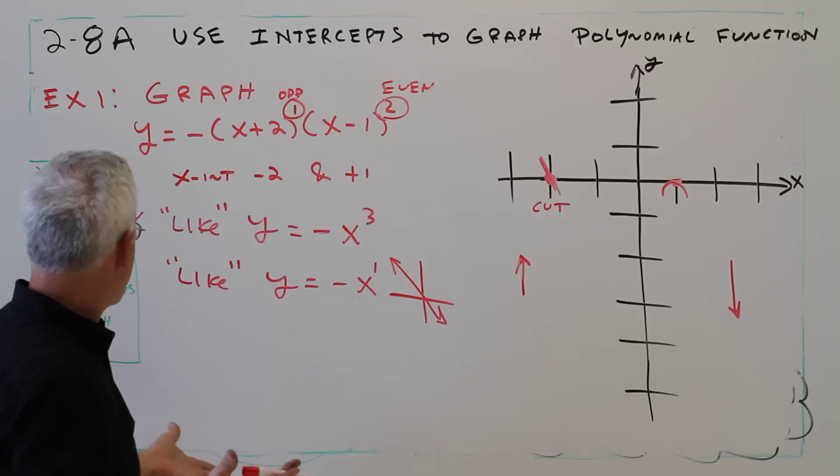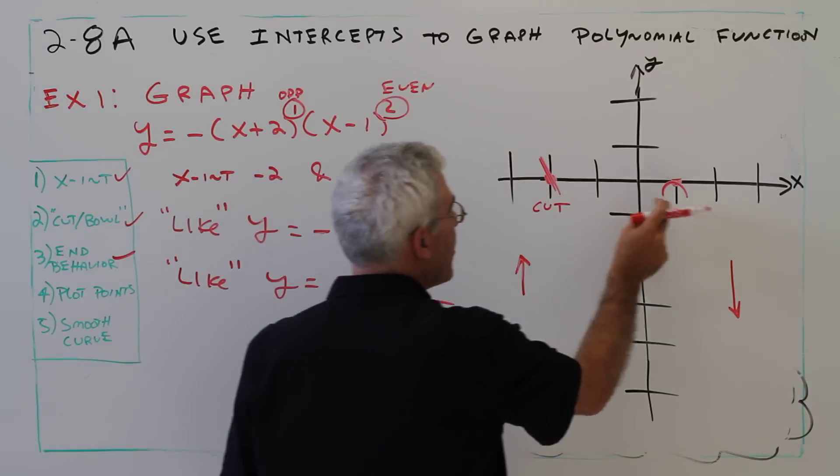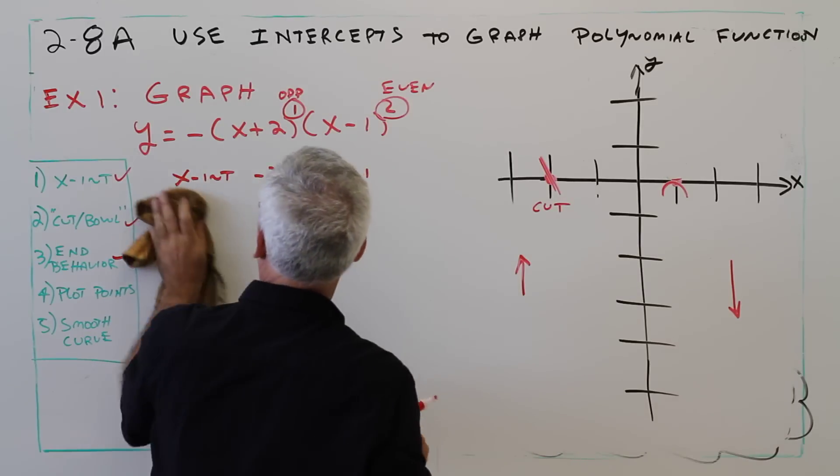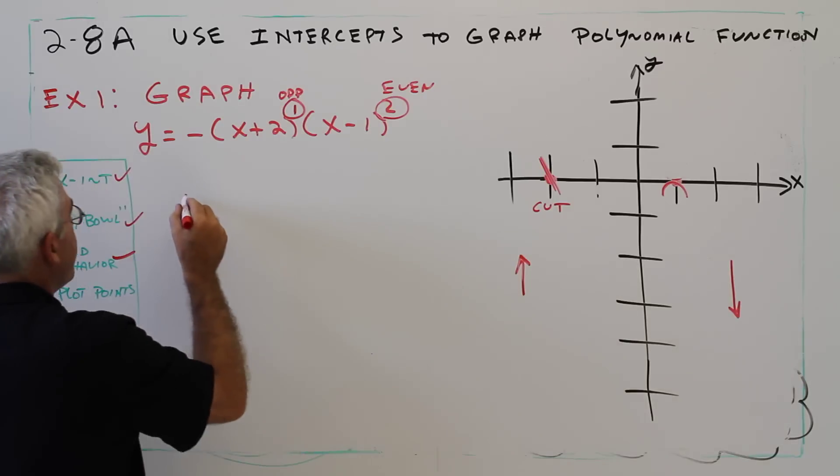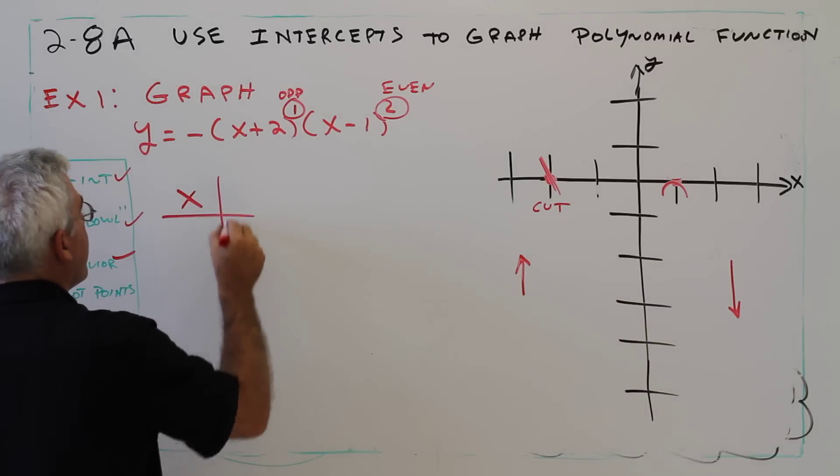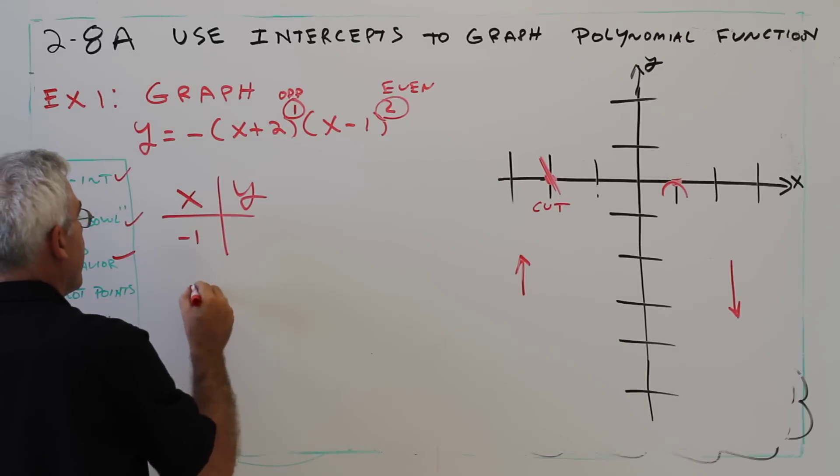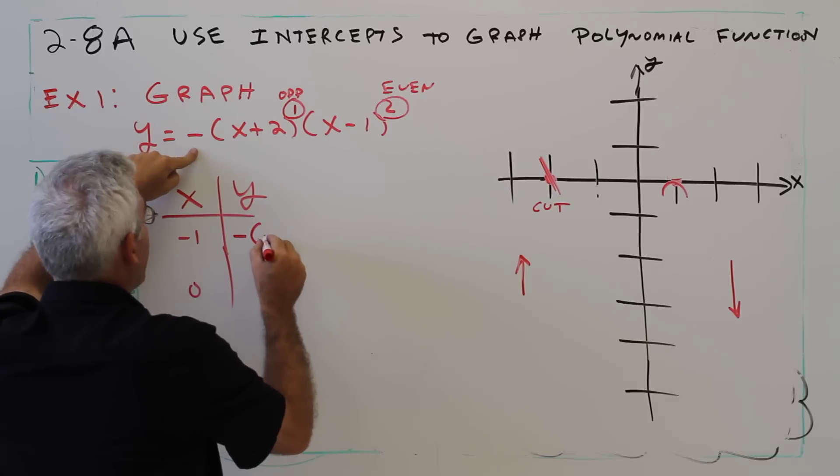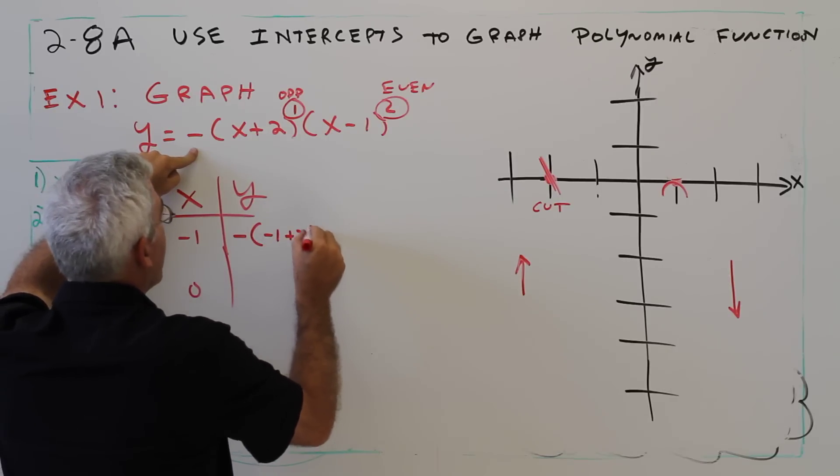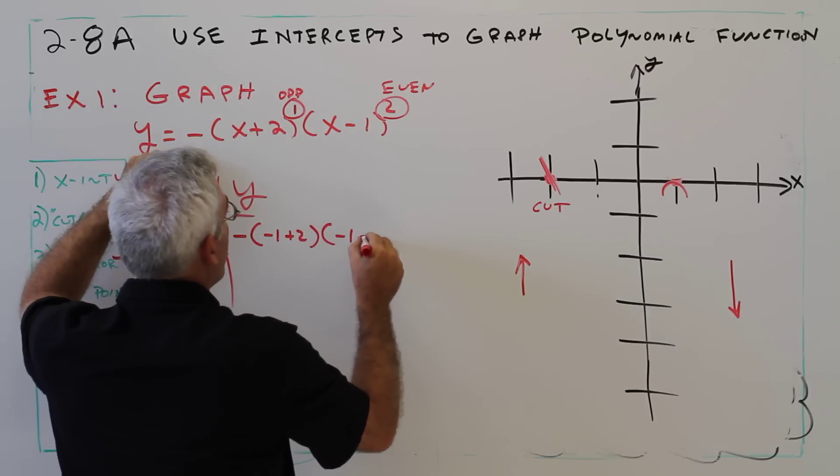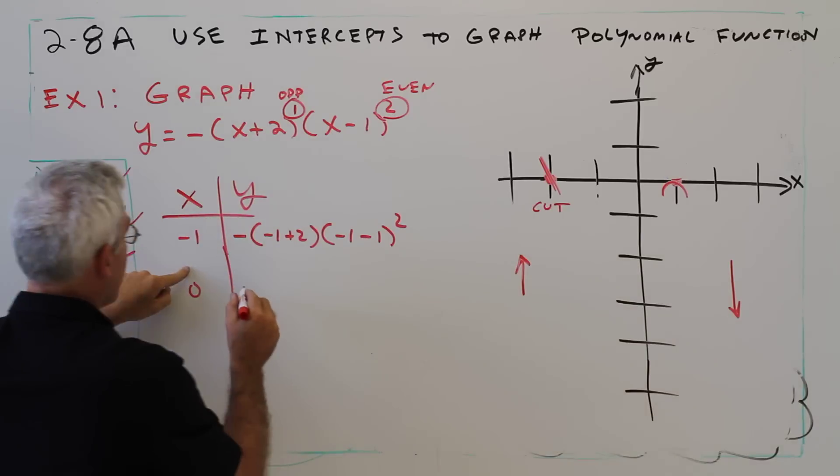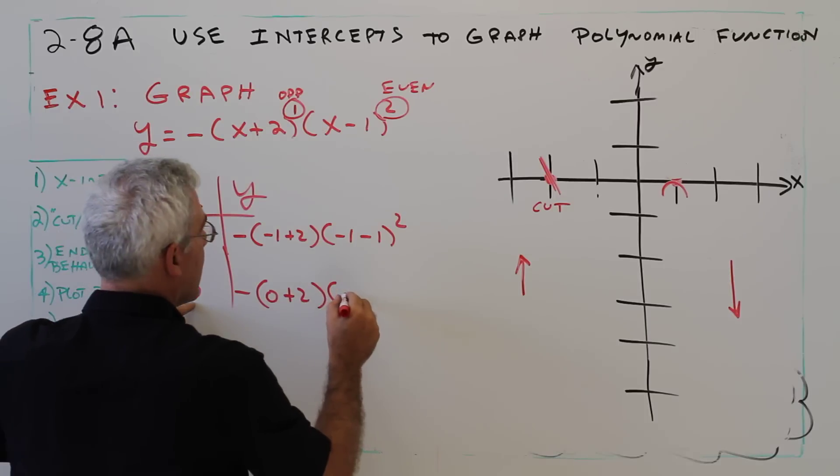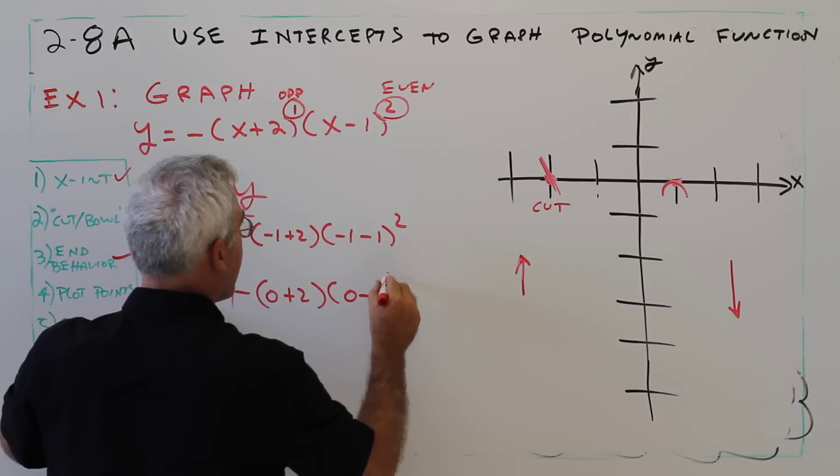And to find a little bit more precision, I'll just plot a few points in between at negative 1 and at 0. So I'll just make a quick table here. I'm just plugging negative 1 into the original function. So the opposite of negative 1 plus 2 times negative 1 minus 1 squared. 0 plus 2 times 0 minus 1 squared.